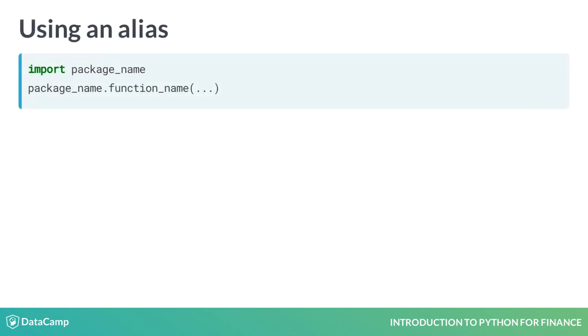As you saw in the last slide, every time you want to use a function from a package, you need to type the package name and the function name, which can get tedious. To make your life easier, you can use an alias to refer to the package by using the as keyword.